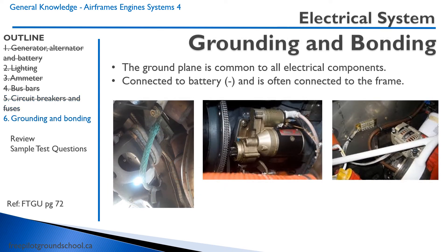The ground plane is common to all electrical components in the aircraft. In a metal aircraft — such as a steel tube fuselage or aluminum construction — everything grounds to the structure. If you look at the alternator, you'll only have one big wire going in for the positive end, and the body of the alternator bolts directly to the engine as the ground. Similarly, a light will have only one wire going to it, and a short wire from the other terminal goes directly to the airframe.